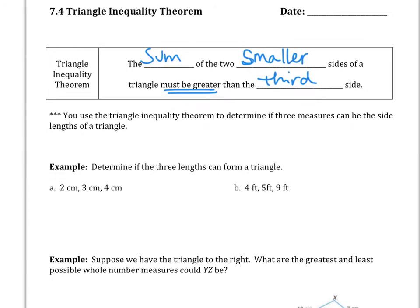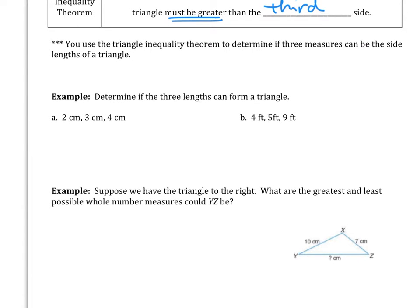Alright, so let's move down here to our examples. We are going to determine if the three lengths can form a triangle. So the first thing I'm going to do is circle that larger side so we definitely know that. We know that those two smaller sides must be greater than that third side, so I'm going to set up our little equation.